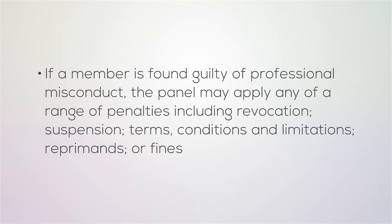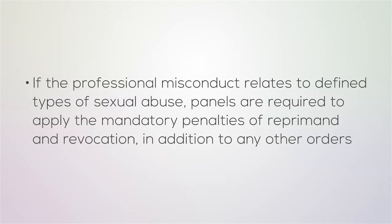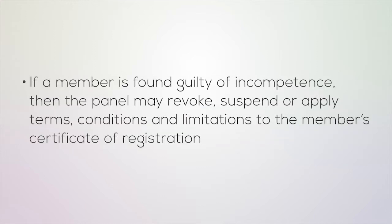Penalties for professional misconduct include revocation, suspension, terms, conditions and limitations, reprimands, or fines. If the professional misconduct relates to defined types of sexual abuse, panels are required to apply the mandatory penalties of reprimand and revocation, in addition to any other orders. If a member is found guilty of incompetence, the panel may revoke, suspend, or apply terms, conditions and limitations to the member's certificate of registration.